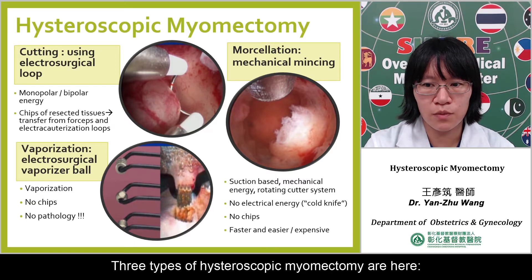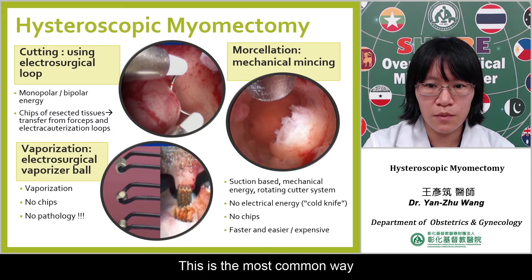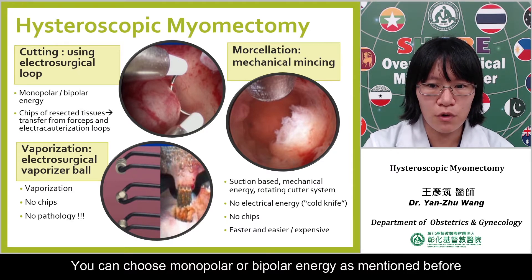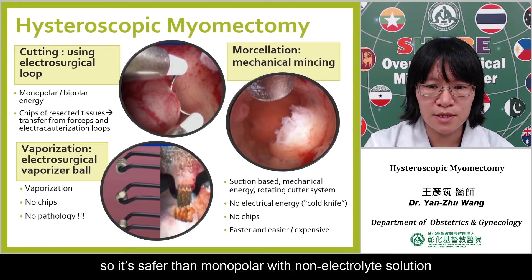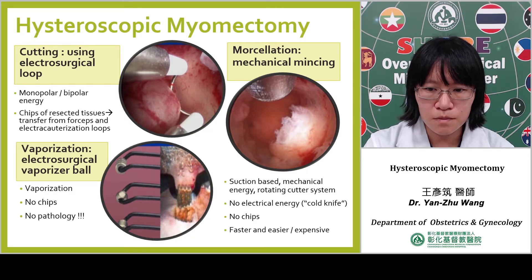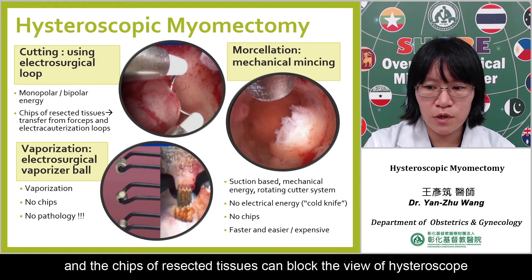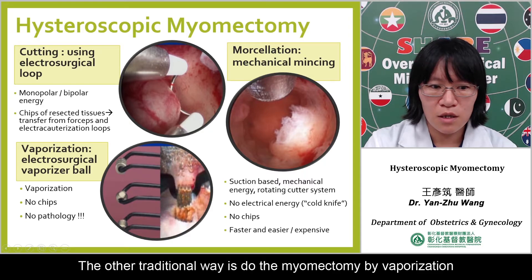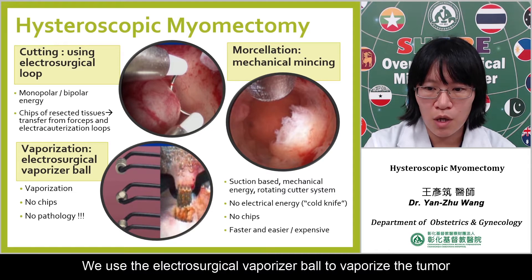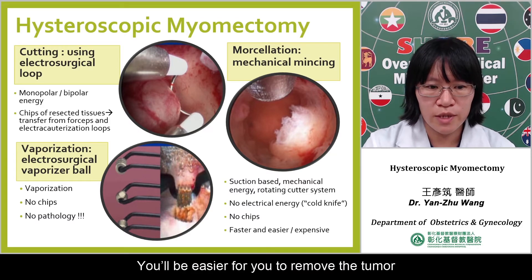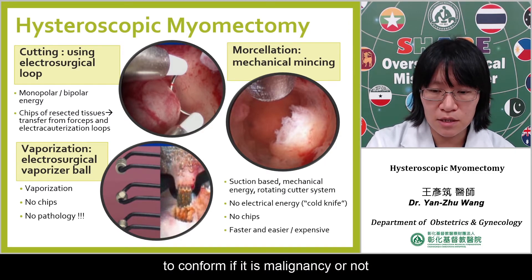The three types of hysteroscopic myomectomy: we can use electrosurgical loops as a cutting method — this is the most common way. You can choose monopolar or bipolar energy; bipolar would be the best choice because the distension media is electrolyte solution, so it is safer. The difficulty of the resectoscope is that you have to repeat the procedure multiple times and the chips of resected tissues can block the view. The other traditional way is myomectomy by vaporization — we use the electrosurgical vaporizer bowl to vaporize the tumor, so there are no chips, making it easier to remove. However, because of vaporization, you won't have a pathology specimen to confirm if it is a malignancy.